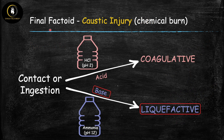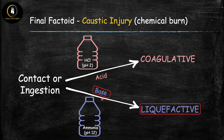Let's wrap up with one important factoid distinguishing coagulative from liquefactive necrosis: caustic injury. Caustic injury — chemical burns — occurs when skin or mucous membranes contact an acid or base, or when one is ingested causing injury to the GI tract. If the caustic chemical is an acid, it leads to coagulative necrosis through denaturation of proteins. If it is a base, it liquefies and solubilizes proteins, leading to liquefactive necrosis. Remember: acid → coagulative necrosis; base → liquefactive necrosis.